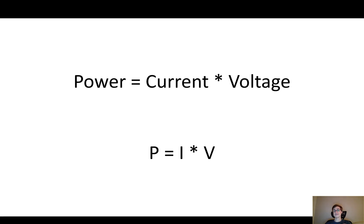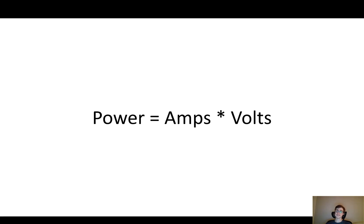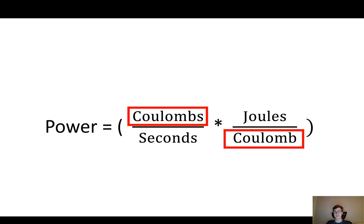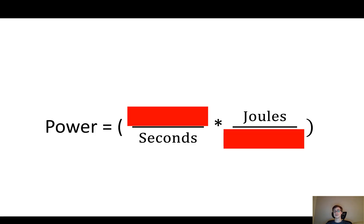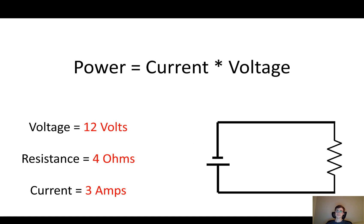It turns out the formula is power equals current times voltage, or symbolically P equals I times V. Let me tell you why — it's not random, it makes sense. Current is measured in amps and voltage is measured in volts. An ampere measures how many coulombs pass by per second, and a volt measures how much energy every single coulomb has. When you multiply them, the coulombs cancel out, and you end up with joules per second, which is the same as watts — the unit of power. That's why it works out.